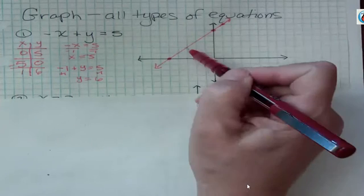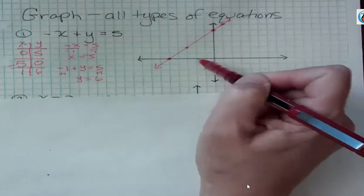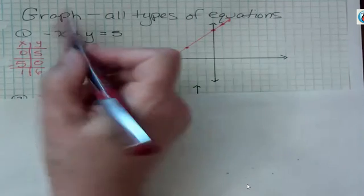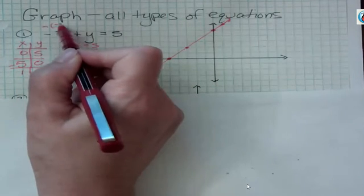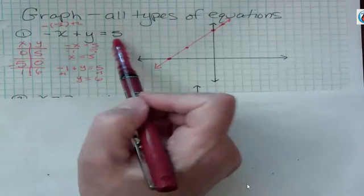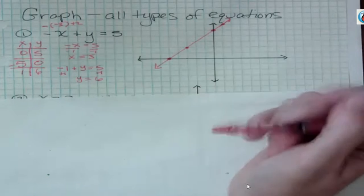For instance, let's take this point. This is negative 3, 2. Well, if x was negative 3, we'd have negative negative 3 plus 2. Negative negative 3 is 3 plus 2 is 5. That's a solution to that equation, and so forth.